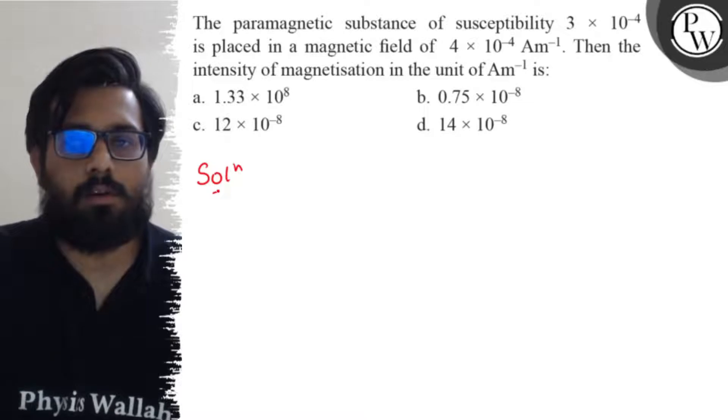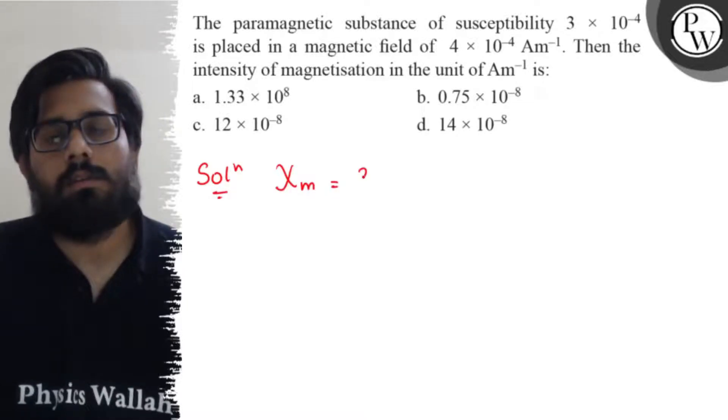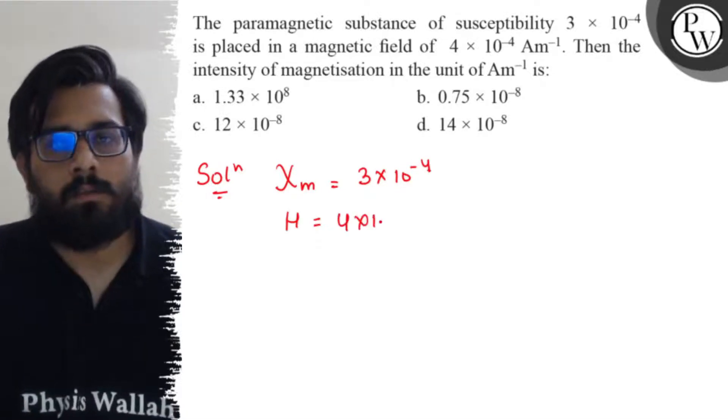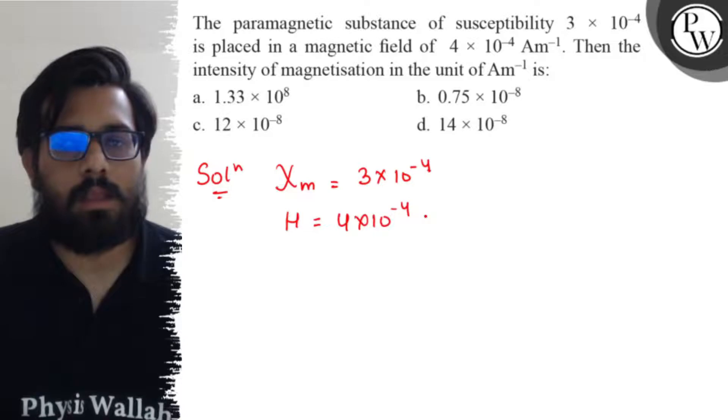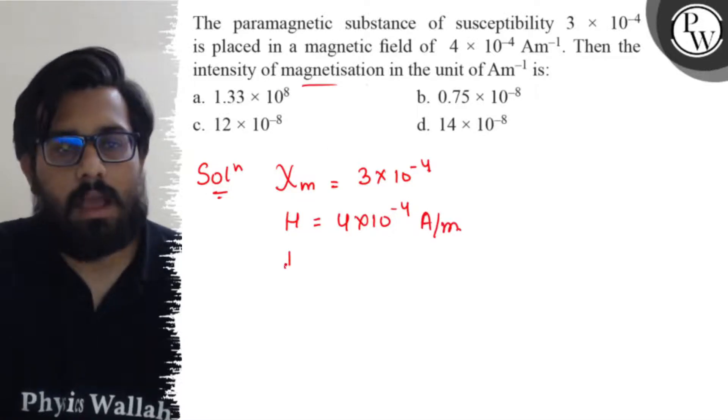In this question we have the value of susceptibility χ = 3×10^-4, we have the value of H = 4×10^-4 A/m, and I have to find out the intensity of magnetization I.